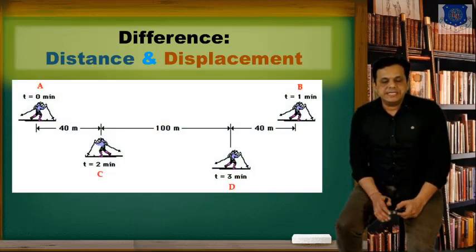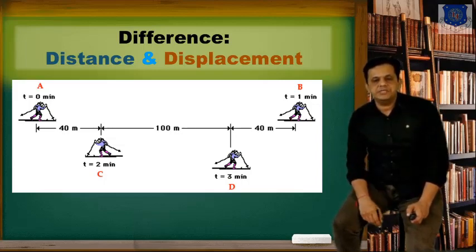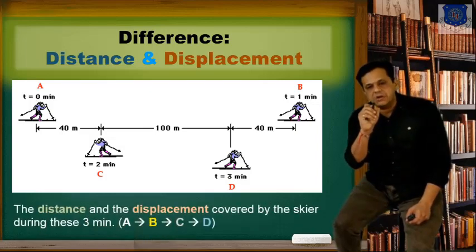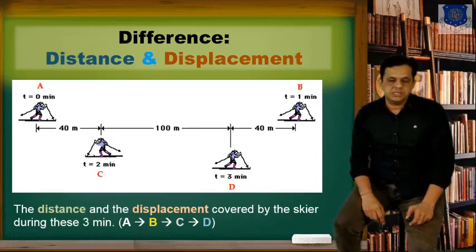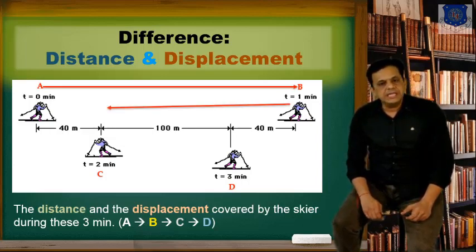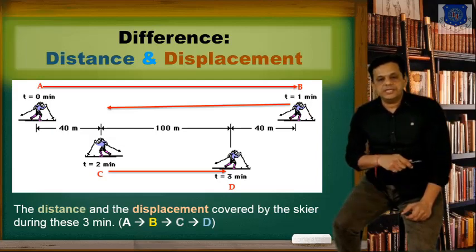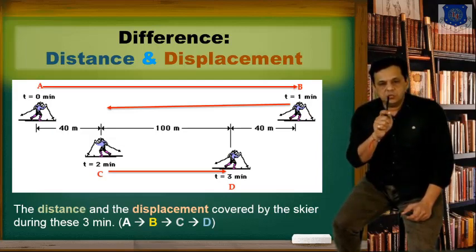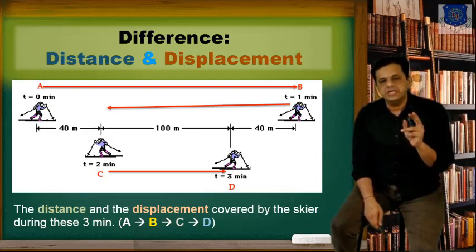First of all, we'll see what is the difference between displacement and distance. Here you see a figure: starting from point A to B to C to D, we have to travel in three minutes. The distance covered by the scale during these three minutes — A to B is 40, plus 100, plus 40, that is 180 meters. Then B to C is 140, and then C to D is again 100 meters, making a total of 420 meters.